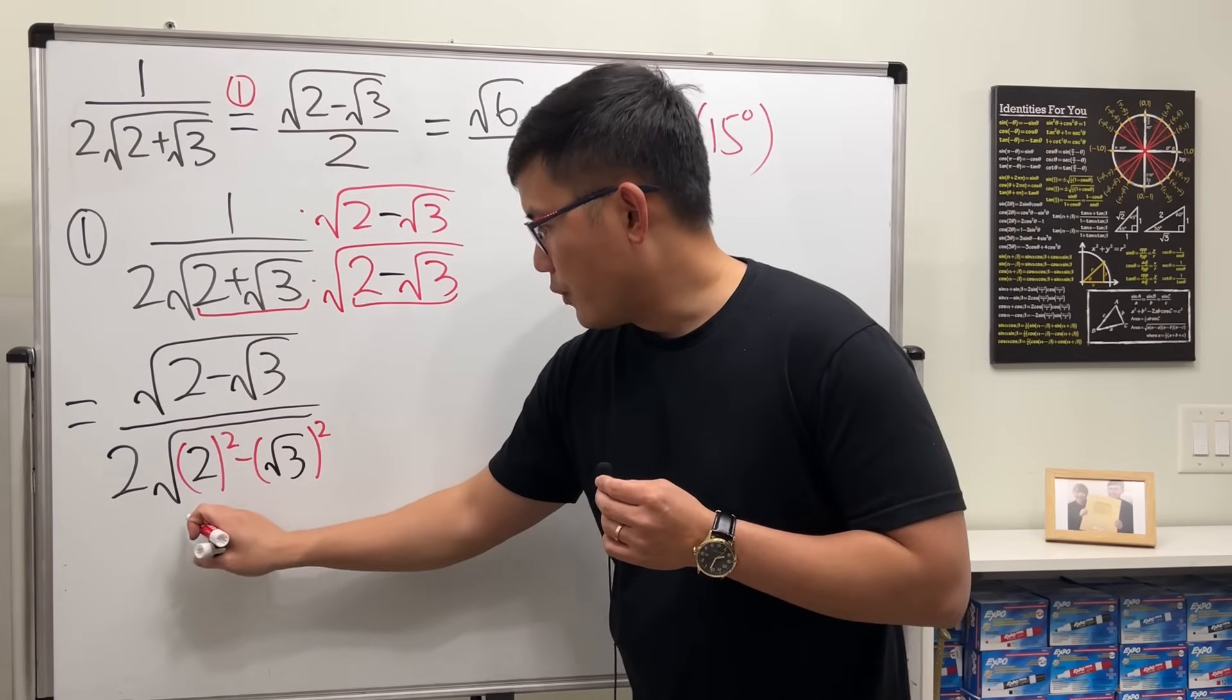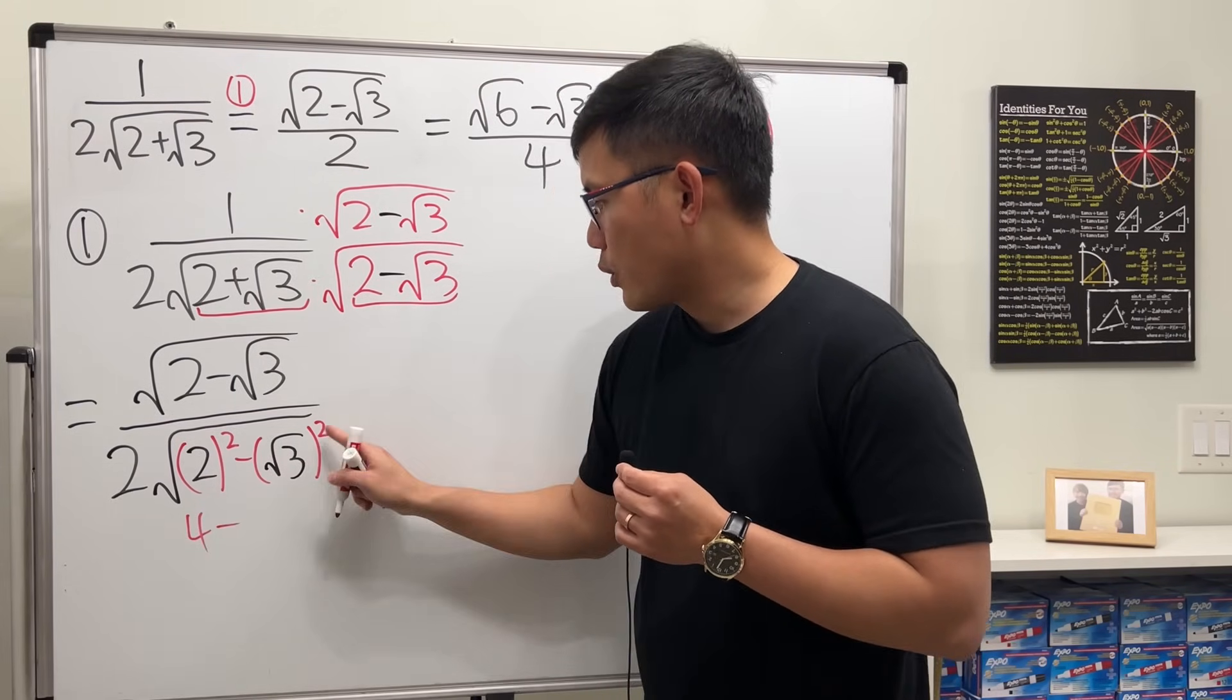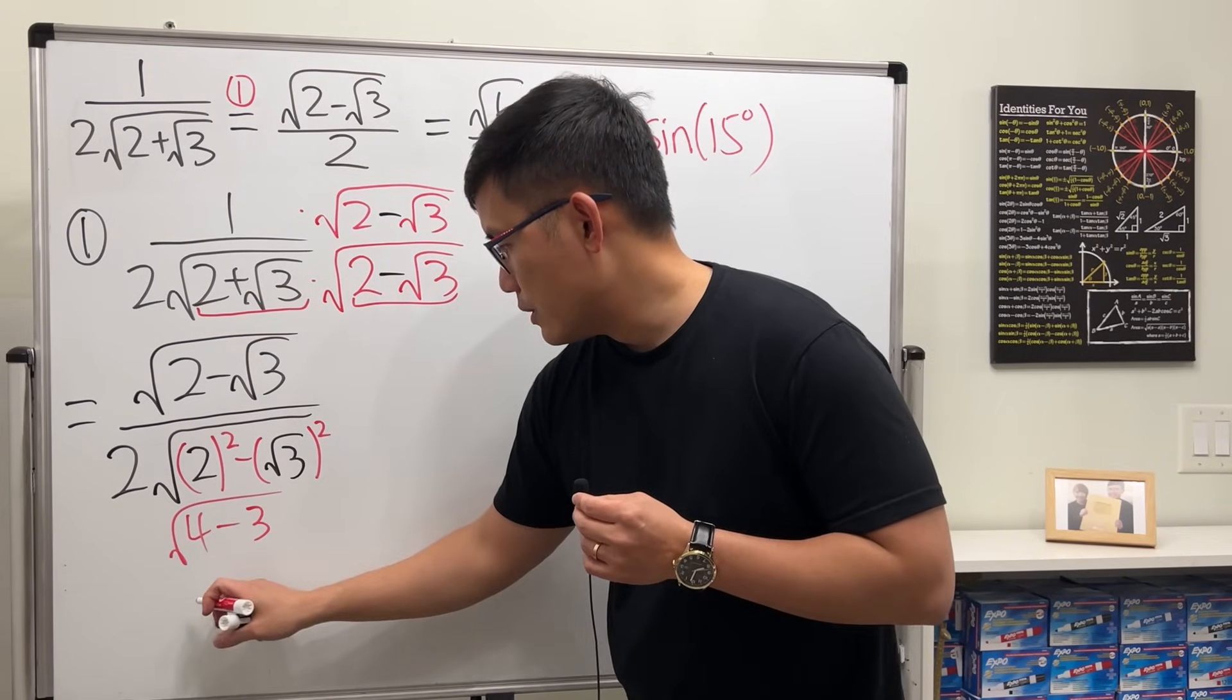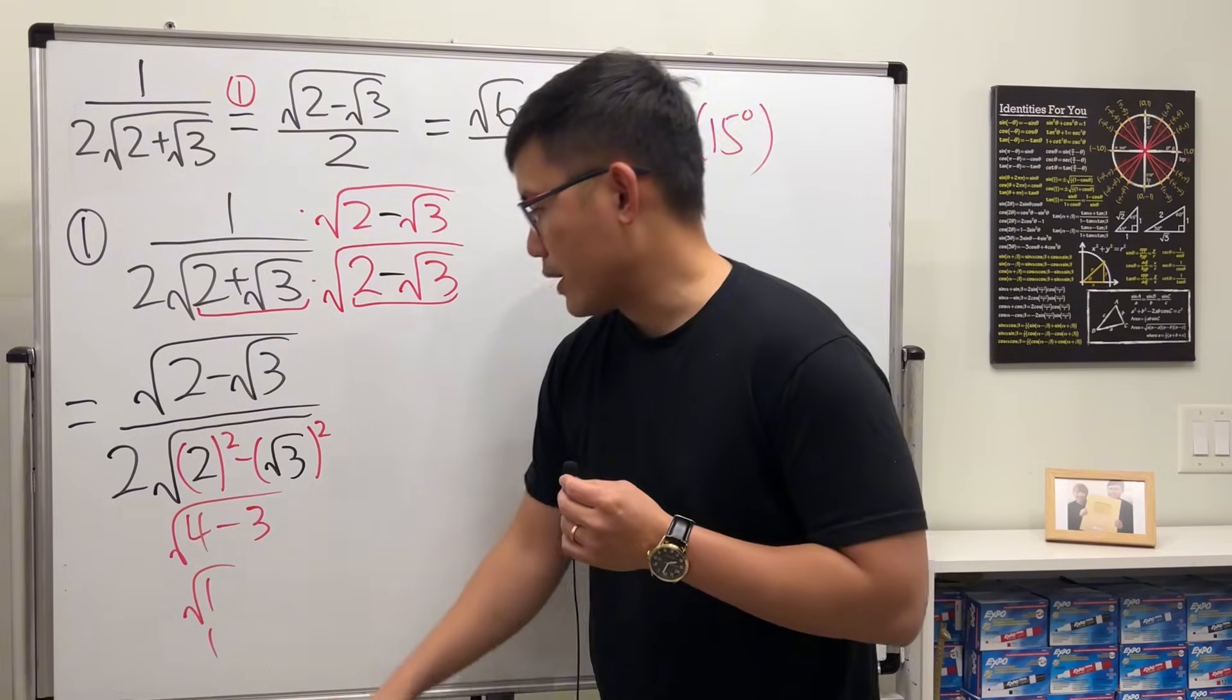Well, this is just 4. And then minus square, square root cancel. So it's just 3. And then 4 minus 3, which is of course 1. And that's just equal to 1.